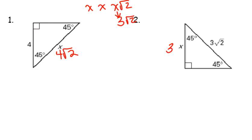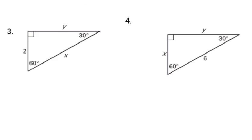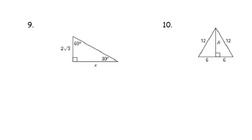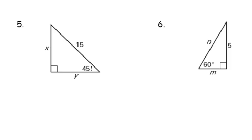I would like you to do the remainder of these triangles in your notes check. One thing to point out: this marking does not mean 45 exclamation point — it means 45 degrees. For some reason, the printer sometimes changes the degree symbol to an exclamation point when you convert to a PDF, so don't get too excited. Please do the remainder of those triangles in your notes check, and bring any questions that you have to class. Thanks!